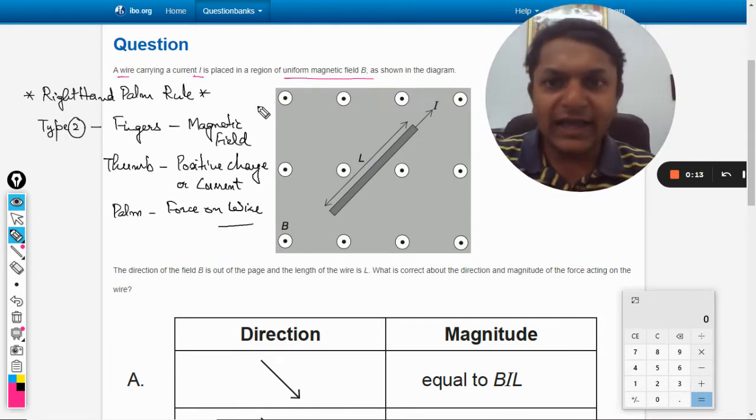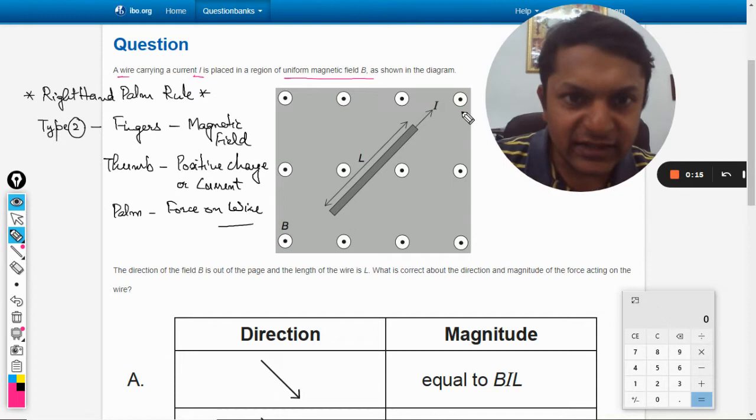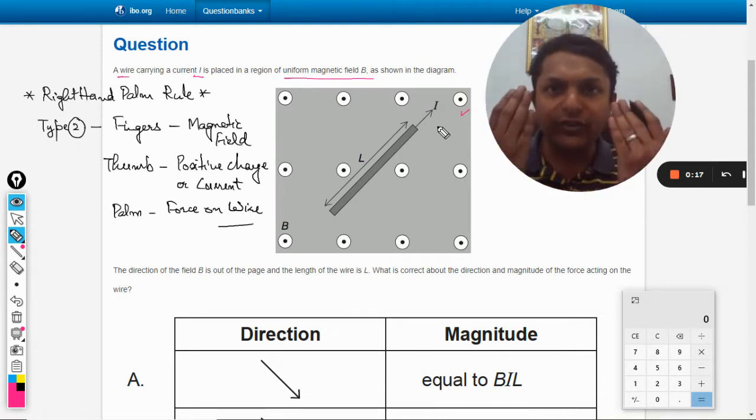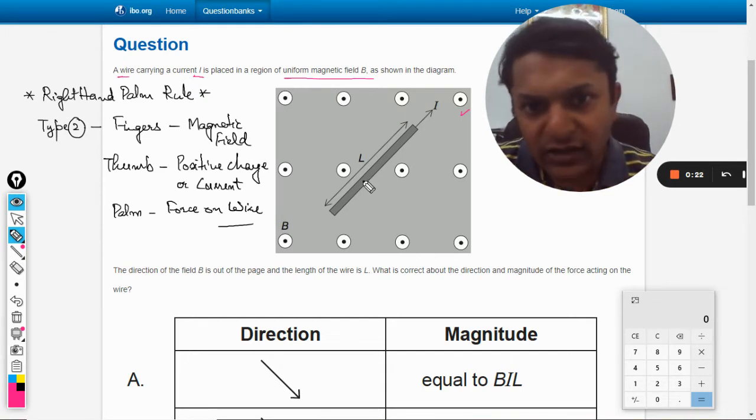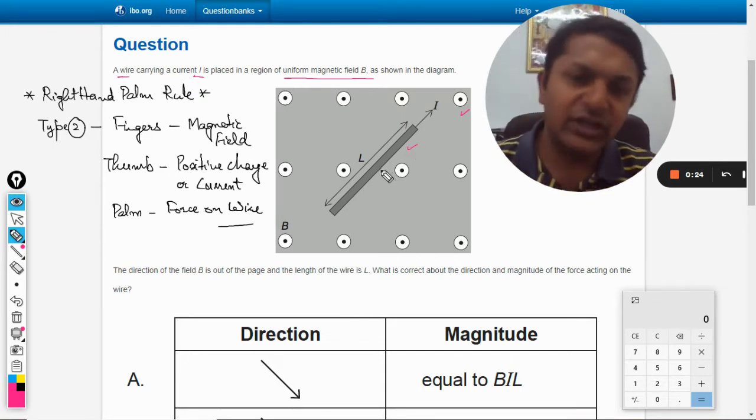As the diagram goes, we can see that the magnetic field is coming out of the plane from the screen towards you, and there is a wire placed at nearly 45 degree angle. The current direction is also shown here.